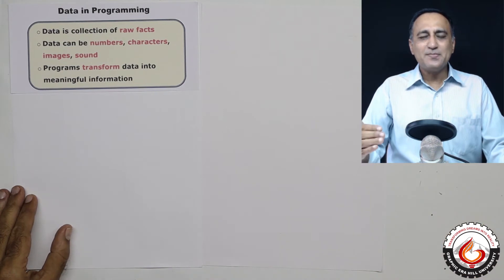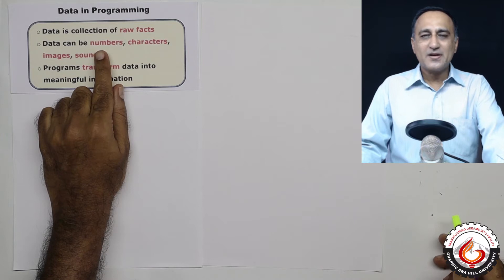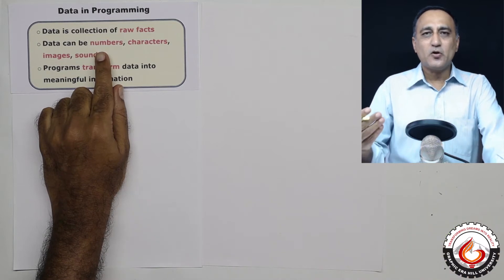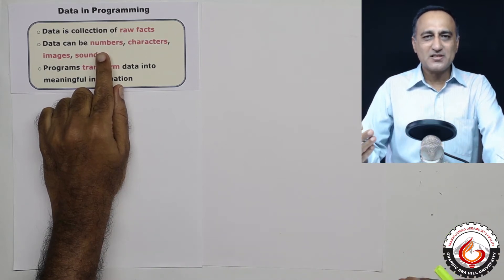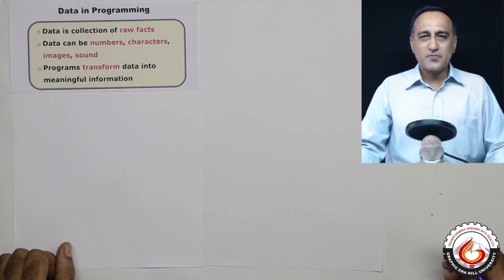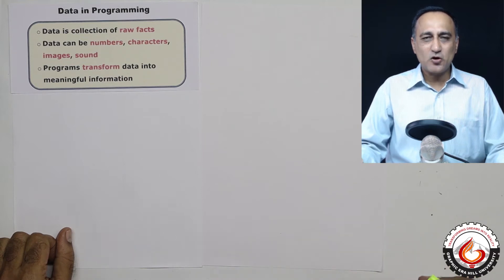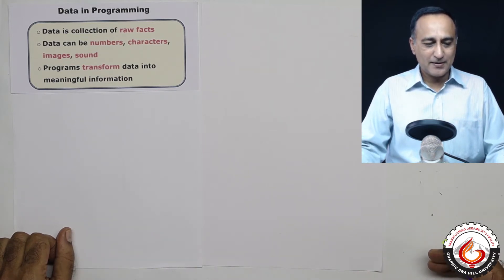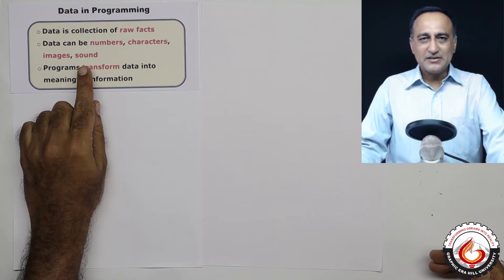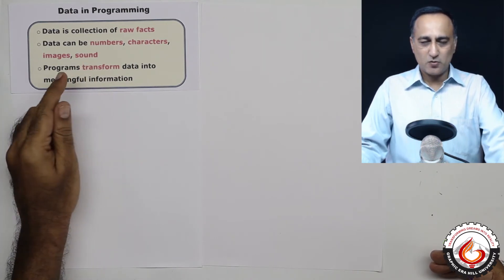Data is simply raw facts. For example, your class roll number, your age, your address — these are all examples of data. Some of you may be surprised, but even your photos are considered data. The songs you record or sing are also data. So data can be numbers, alphabets, images, or sound.